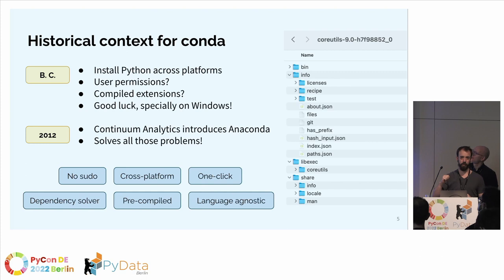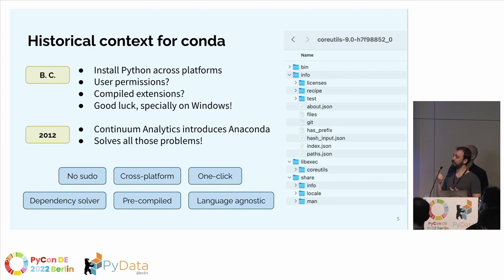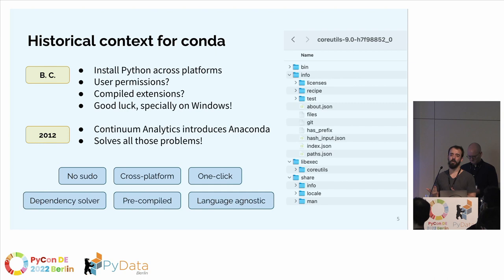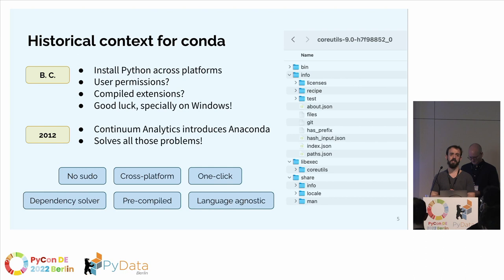Some historical context for Conda — let's go to the BC times before Conda existed. You had to be really lucky or very stubborn to make things work. Installing Python across platforms required admin permissions, and compiling extensions was painful, especially on Windows without a compiler. Then Anaconda, then called Continuum Analytics, dropped Conda and said 'we solved all of that for you,' and it immediately became a success.